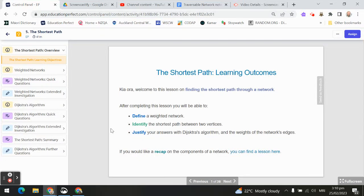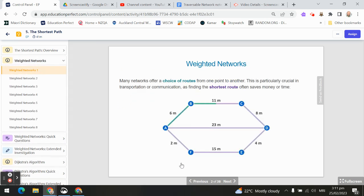Kia ora! In this video lesson, we are going to be talking about finding the shortest path through a network. After completing this, you'll be able to define what a weighted network is and identify the shortest path between two vertices. You're going to be able to justify your answer with Dijkstra's algorithm and the weights of a network's edges. The justification will be needed for higher levels of achievement.